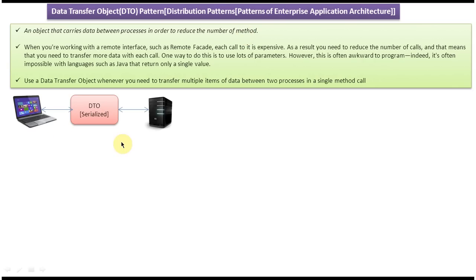Here you can see a client and a server. These are two different processes. If the client wants to send some data to the server, it will formulate the DTO object and send it to the server. If the client wants some information from the server, the client will send the request, the server will formulate the data transfer object and return it to the client. Usually this data transfer object is serialized — only when it is serialized can we transfer the object via the network.